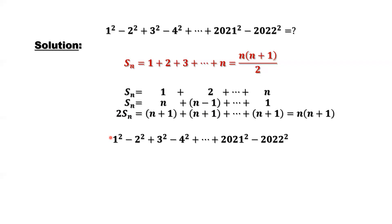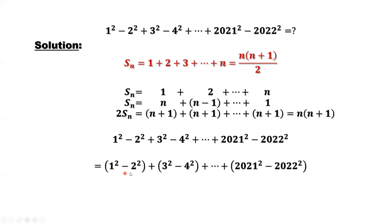Back to our question. We group each two consecutive terms together — one positive, one negative. Starting from the first two: (1 squared minus 2 squared), plus (3 squared minus 4 squared), until (2021 squared minus 2022 squared). You can see the first one is the odd number squared, and the second is the consecutive even number squared.